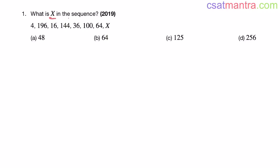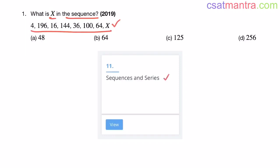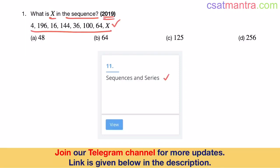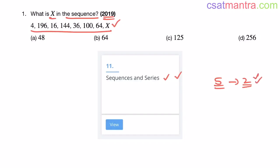What is X in the sequence? A sequence is given and we have to find out X. This question is from the sequences and series chapter, asked in 2019. In 2019, there were five questions asked from this chapter. We have solved two of them — this is the third question. The links to those two questions are available in the description. Questions from this chapter will be very easy — two to three questions every year you can expect. This is a scoring chapter.